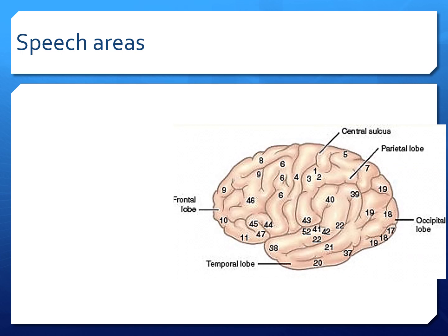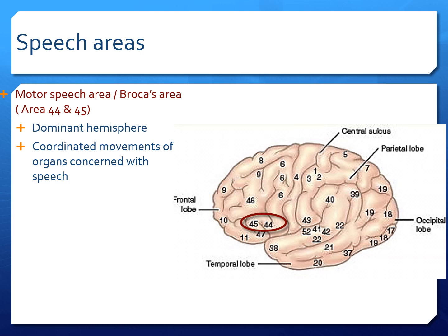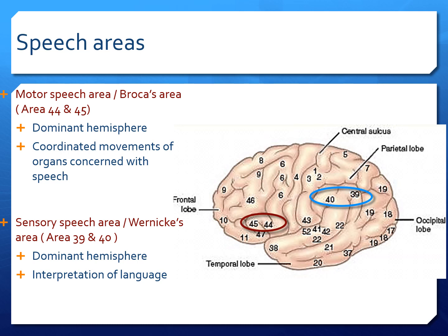Speech areas. We have two types of speech areas. One is the motor speech area, also called Broca's area, involving area number 44 and 45 — that is pars triangularis and pars opercularis. This area is concerned with the coordinated movements of the organs concerned with speech. Then we have the sensory speech area, or Wernicke's area, area number 39 and 40, concerned with the interpretation of language, whether spoken or written. Both these areas are present in the dominant hemisphere. For a right-handed person the left cerebral hemisphere is dominant, and for a left-handed person the right cerebral hemisphere is dominant. So for a right-handed person, Broca's area and Wernicke's area will be on the left cerebral hemisphere.